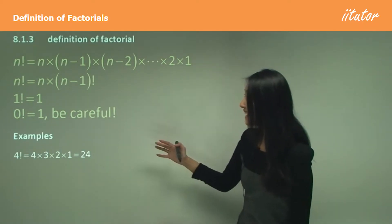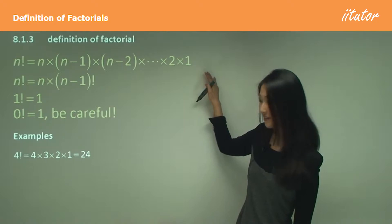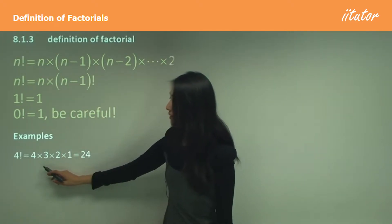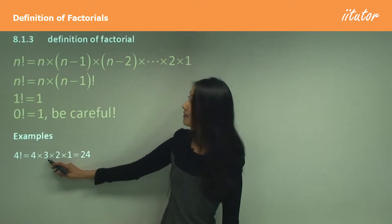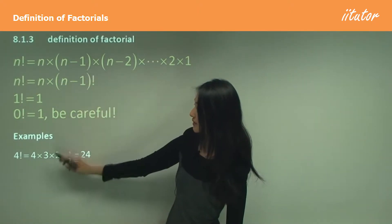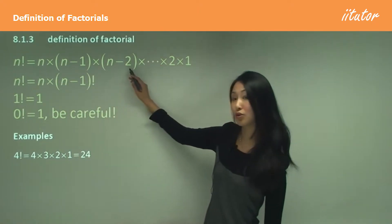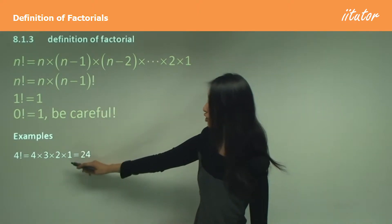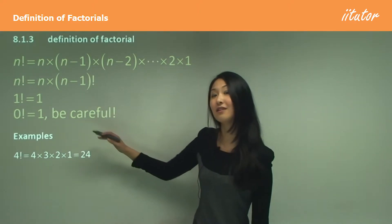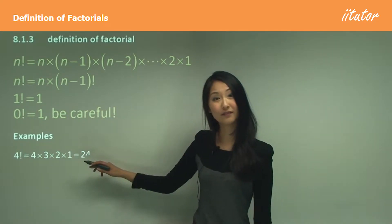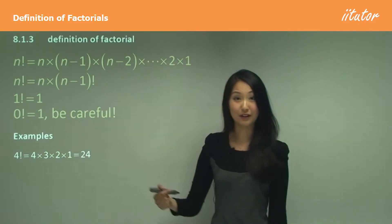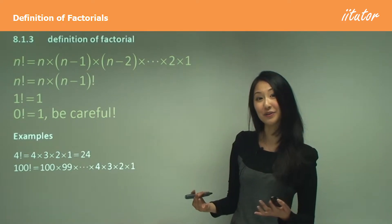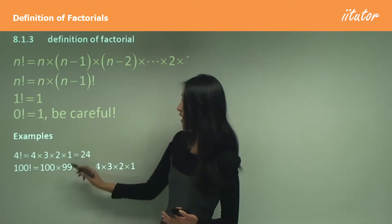Let's look at examples of how we use factorials. For 4 factorial: start at 4, then multiply by one number less which is 3, then by 2, then by 1. You stop when you reach 1. So 4 factorial equals 4 × 3 × 2 × 1, which equals 24.